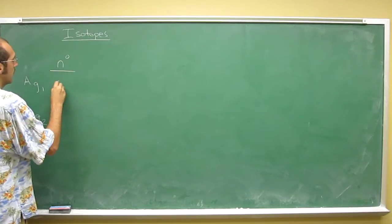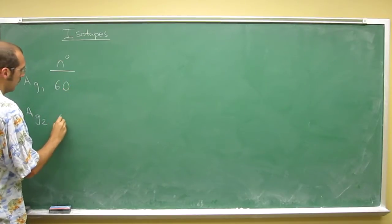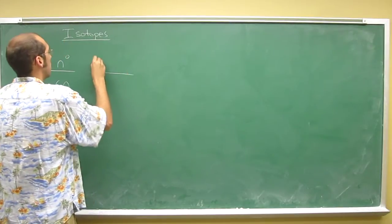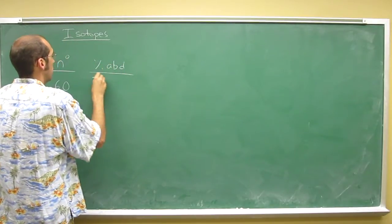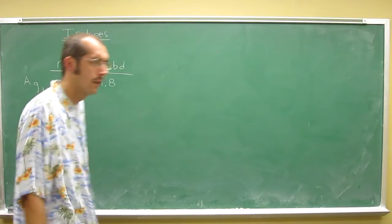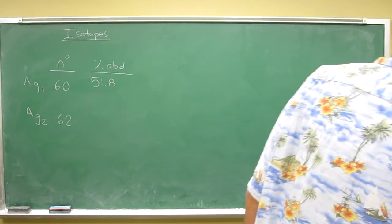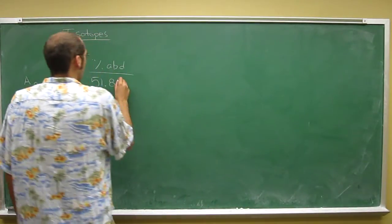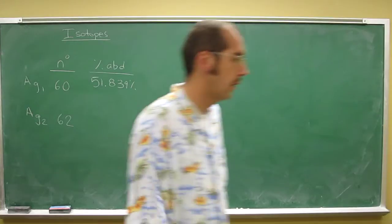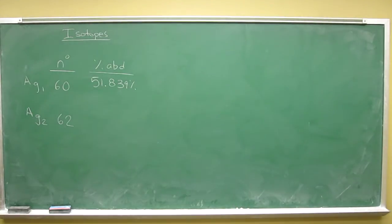What was it, 60 and 62, that's it. And then the percent abundance was 51.839 percent of the one with 60 neutrons.